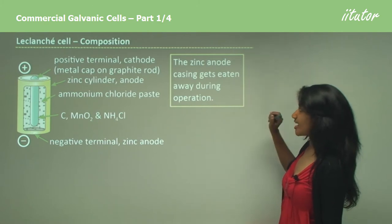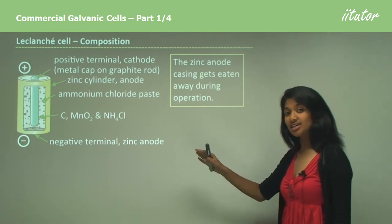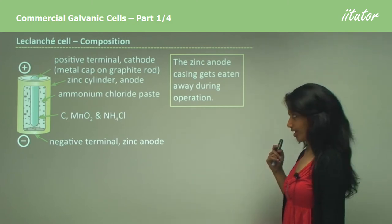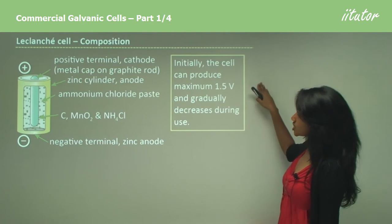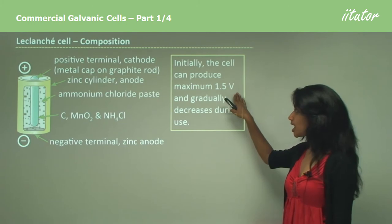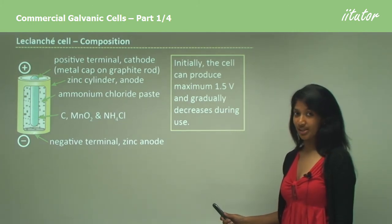The zinc anode casing gets eaten away during operation. So as the zinc turns into zinc ions, the zinc casing gets eaten away. Initially, the cell can produce a maximum of 1.5 volts, but this decreases as the zinc casing is depleted.